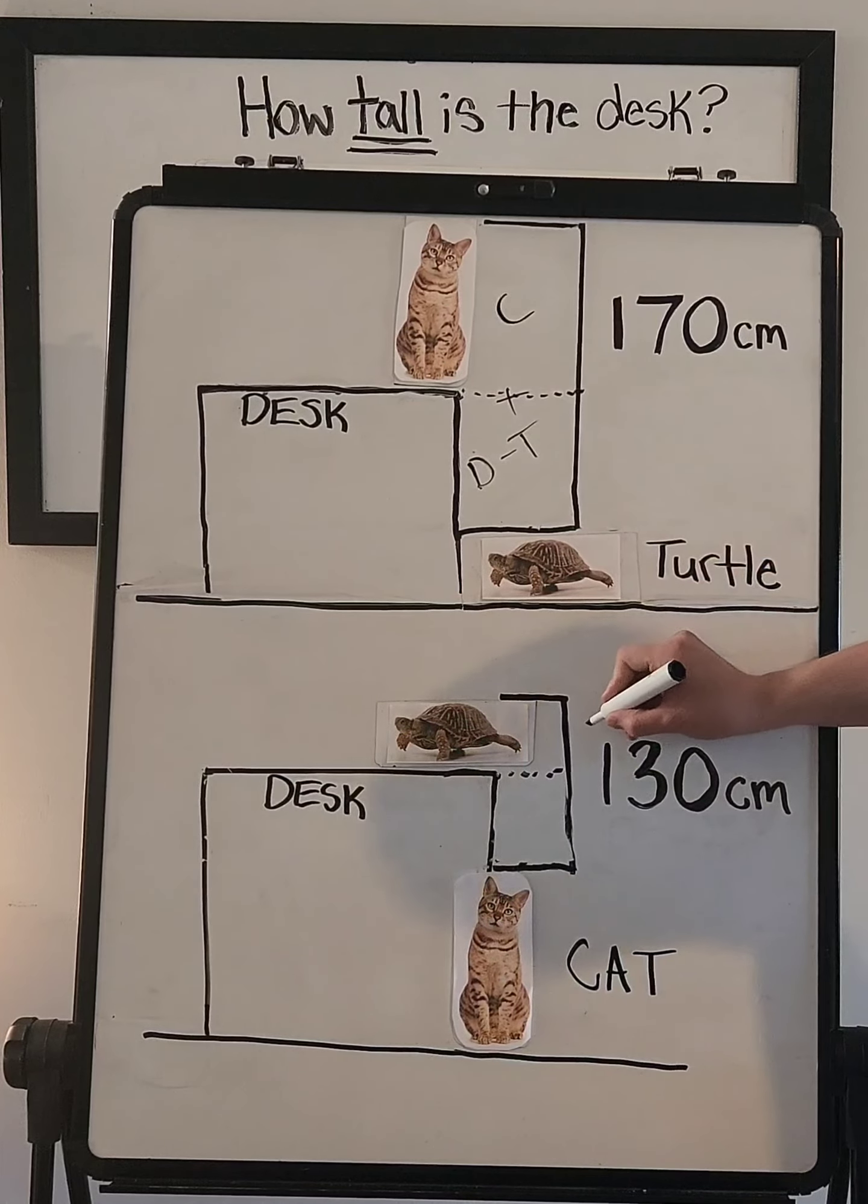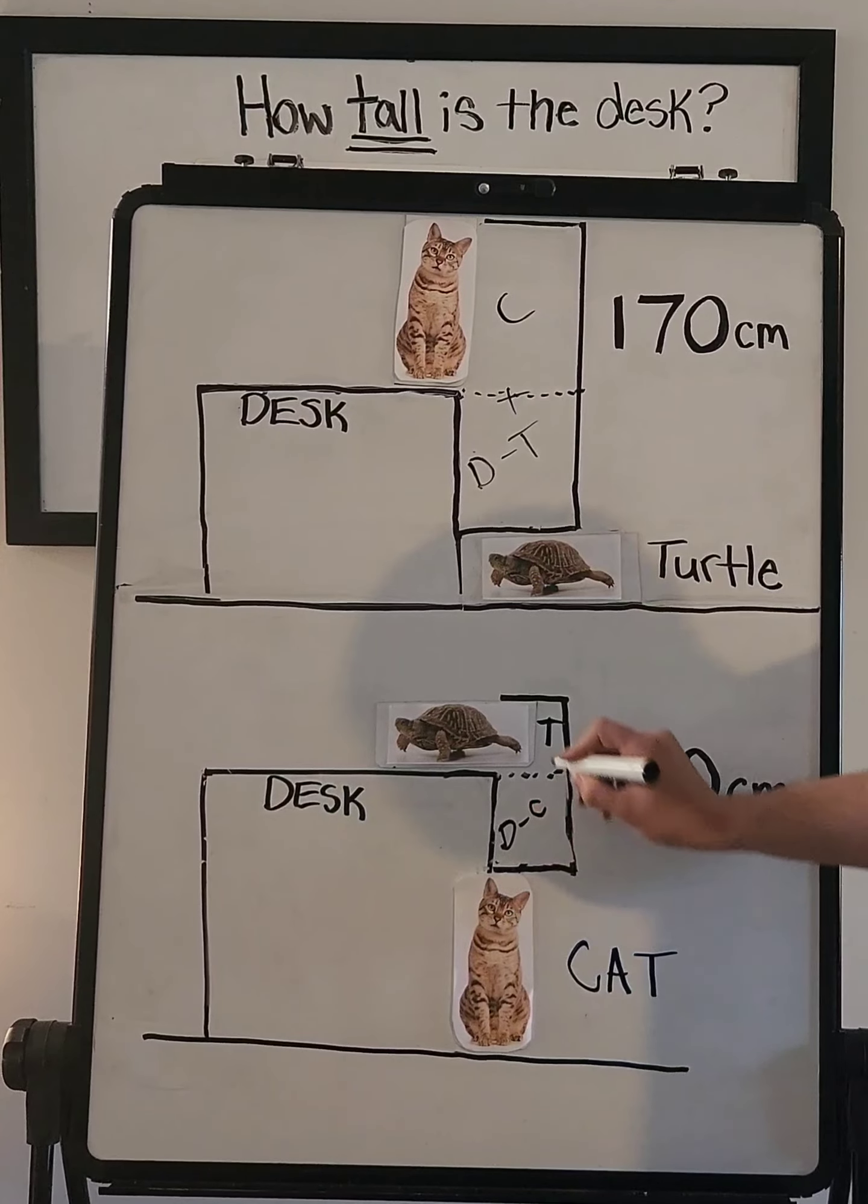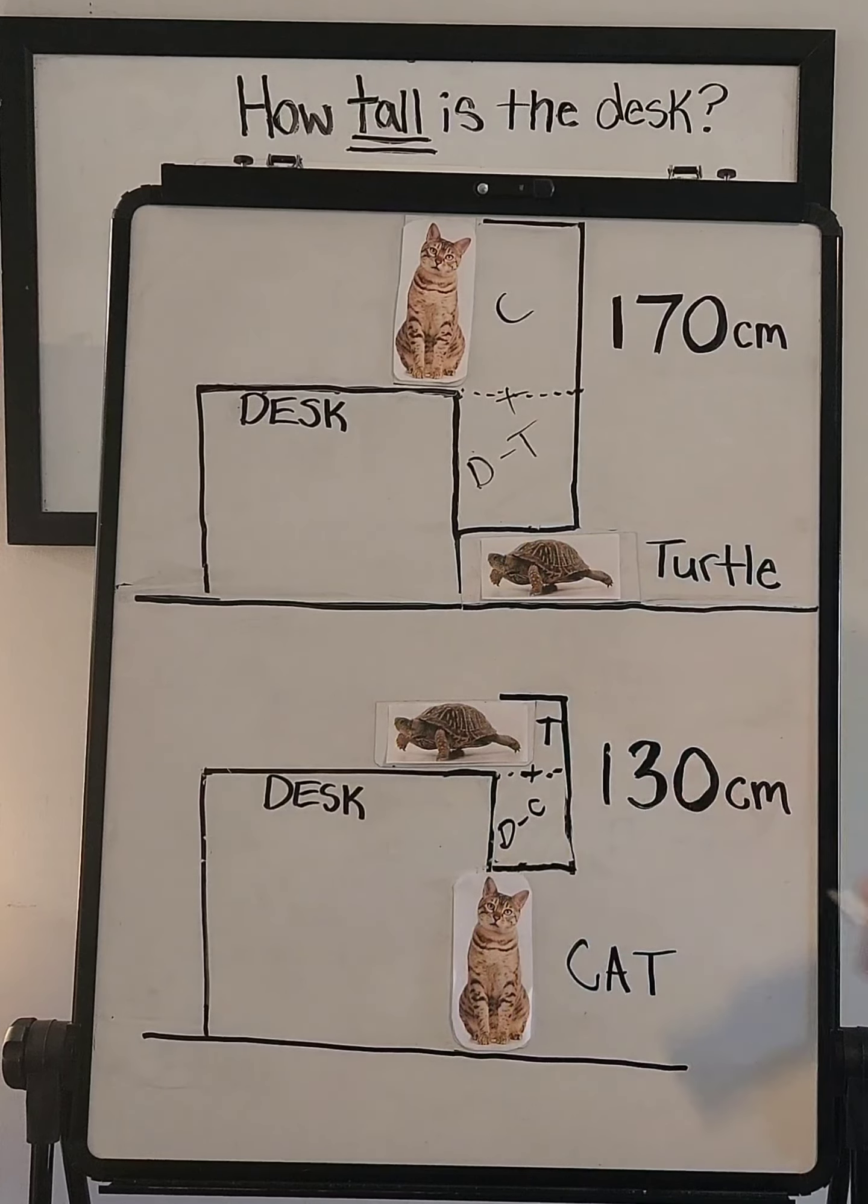Same thing here, you have the turtle, and this is the desk minus the cat. So if you add these two together, it equals 130.